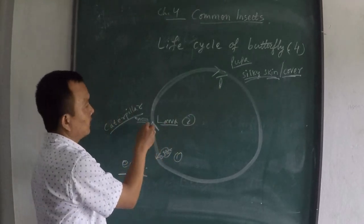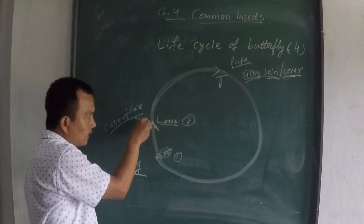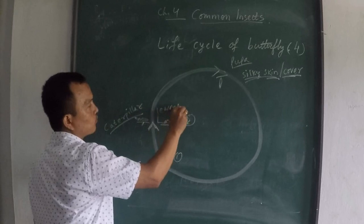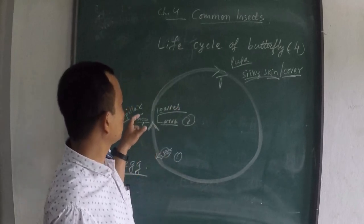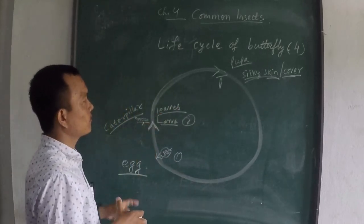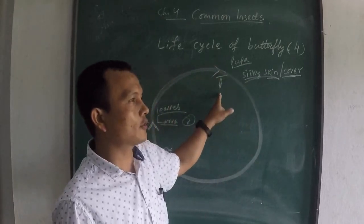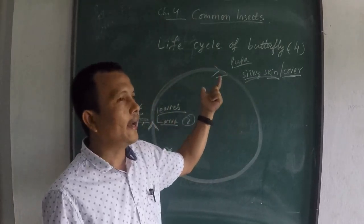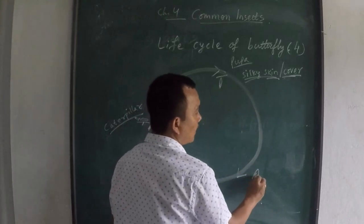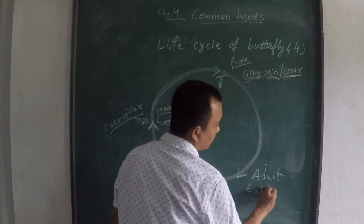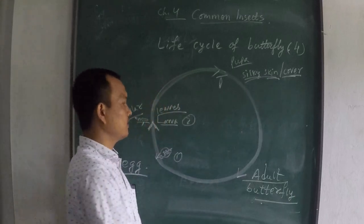So after this, after a few days, and yes, I have forgotten to say one point. During the time of caterpillar or larva period, larva depends on leaves for its food. It consumes leaves, takes the green leaves and started taking the leaves to form its energy or to form its food. So when it converts into pupa, it forms a silky cover, and this silky cover slowly, slowly it develops. And when it turns into maturity, after a few days, it forms an adult butterfly.